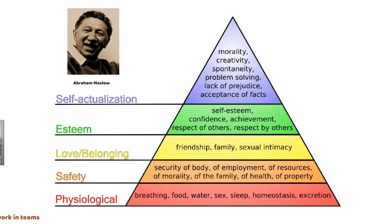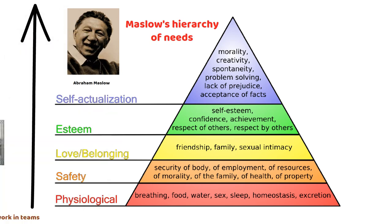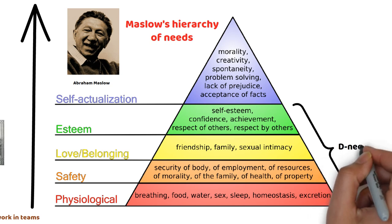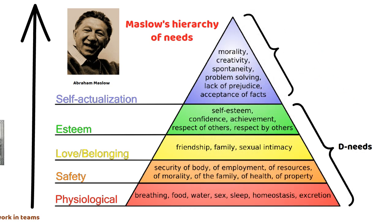Maslow's theory, often called Maslow's Hierarchy of Needs, suggests that people are motivated by a series of needs arranged in a hierarchical order. The hierarchy consists of five levels. From lowest to highest: physiological needs, safety needs, social needs, esteem needs, and self-actualization needs. This five-stage model can be divided into deficiency needs and growth needs. The first four levels are often referred to as deficiency needs, and the top level is known as growth or being-need. These needs must be fulfilled in a specific sequence.